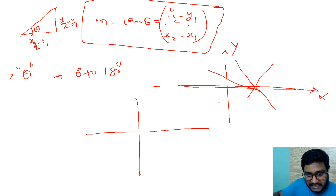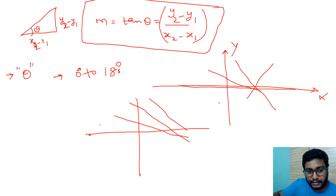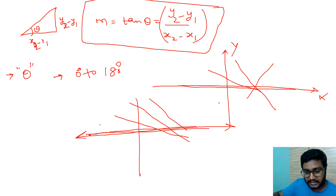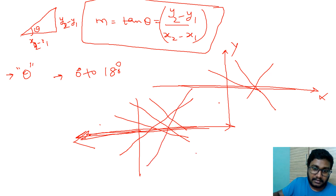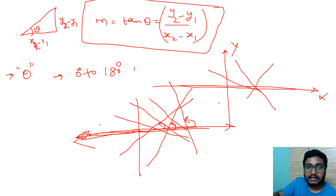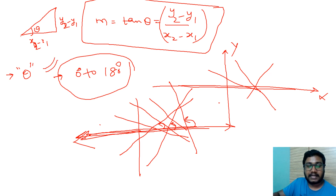If you keep inclining the straight line, when it reaches 180 degrees, the angle made with respect to the x-axis is either 0 or 180. If it crosses 180, the line comes back around to the same direction. So we always take the angle made with the x-axis to be between 0 and 180 degrees only — we don't take the reflex angle.